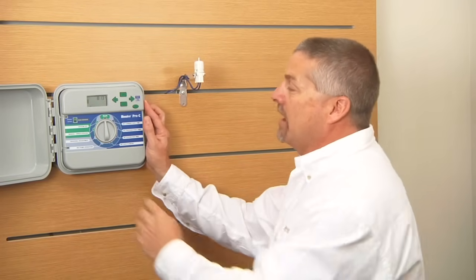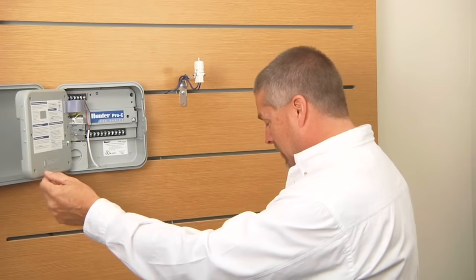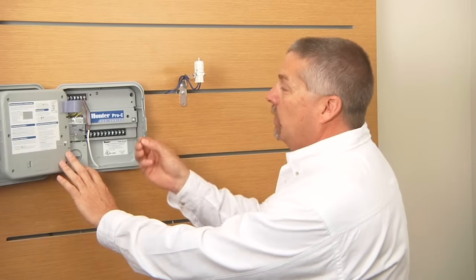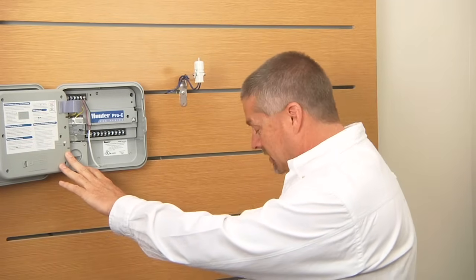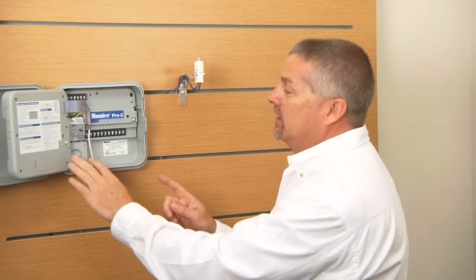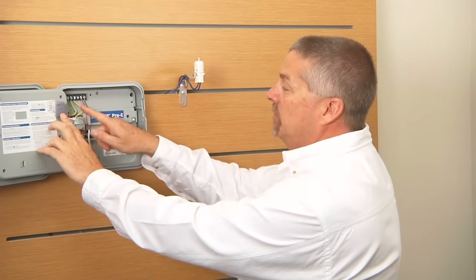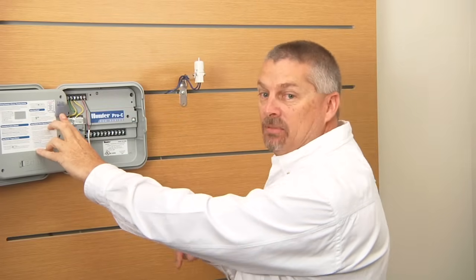If it still says sensor off when you're in the active position, you can locate the chrome jumper tab that you pulled out back in the day, reinstall it and remove your two wires. If you don't have the jumper tab, you can take a small piece of wire, three or four inches long, get rid of your sensor wiring and simply install a jumper wire from sensor to sensor terminal to complete that circuit, to complete the loop.